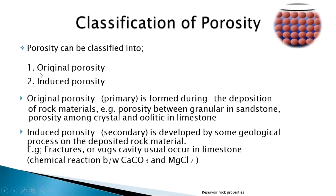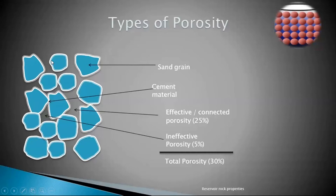There are two kinds of porosity: original porosity and induced porosity. Original porosity is formed during the deposition of rock material — when erosion was happening and silt and sand were accumulating, that is when the original porosity was generated. Induced porosity results from later changes, such as earthquakes causing fractures. Usually, the rock's original porosity is what we are primarily concerned with.